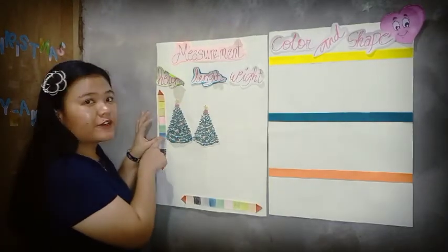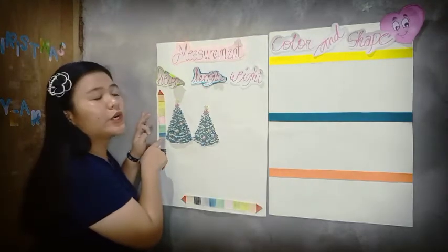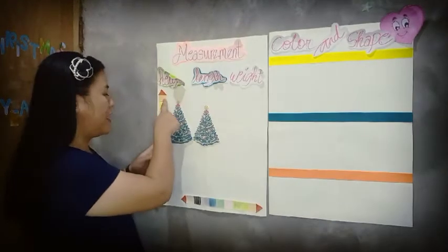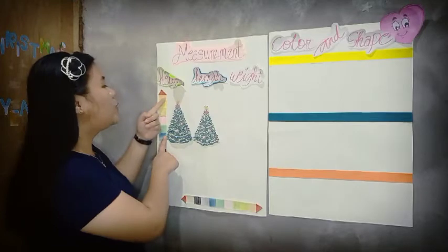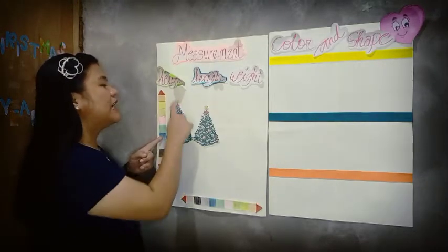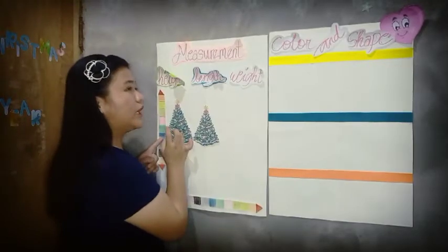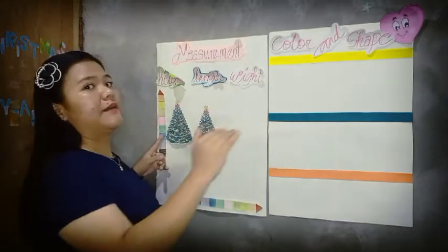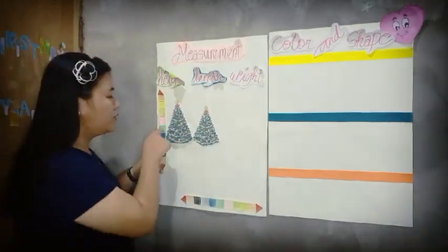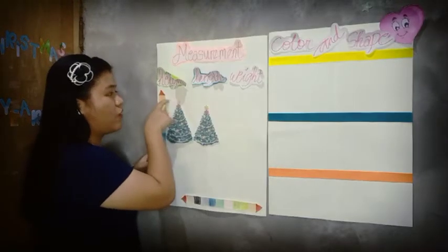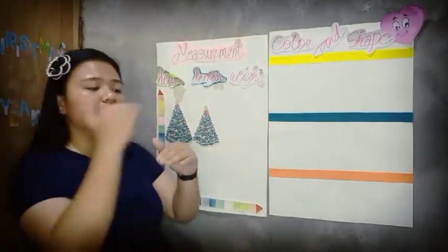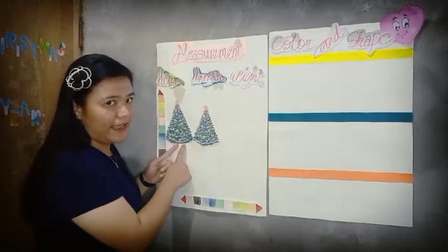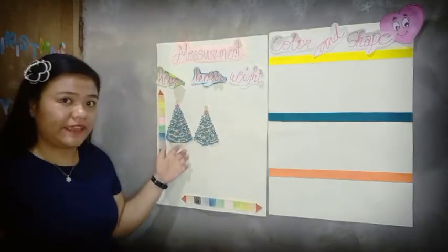We started at the blue block. Counting up, Object A goes up to the orange color — that is six blocks. So Object A, our Christmas tree, has a height of six blocks. For Object B, it starts at blue as well, and reaches up to the yellow — that is five blocks. Object A has six blocks and Object B has five blocks.